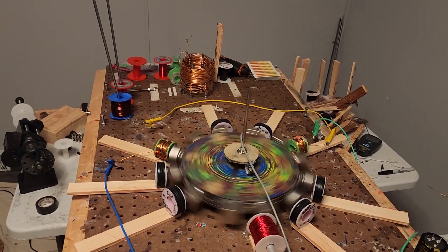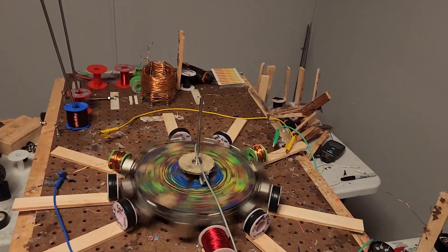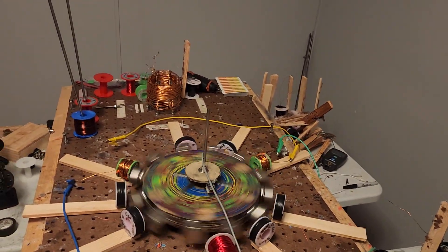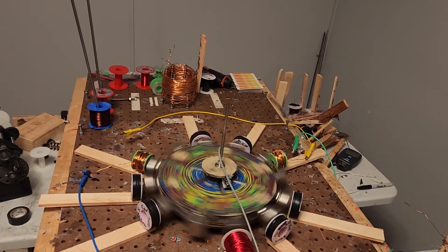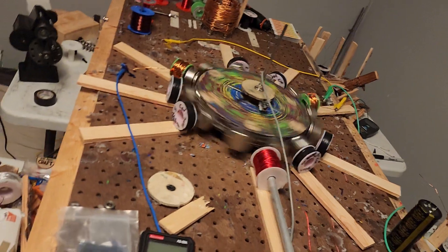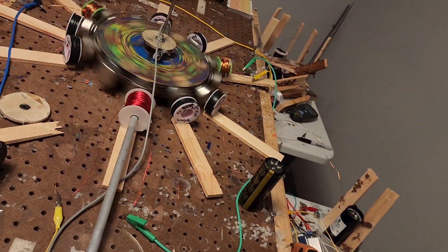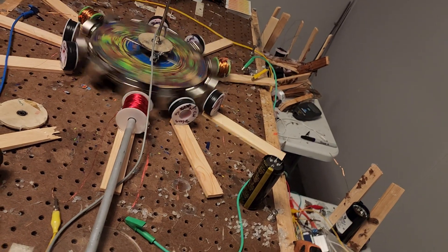All right, so we got two 120s here. We got a 34 and the next one is a 32, and then a 14 gauge. And I'm thinking that they're all going to be their own circuit.